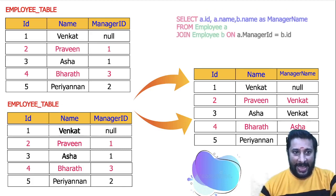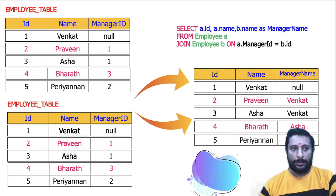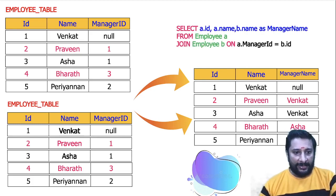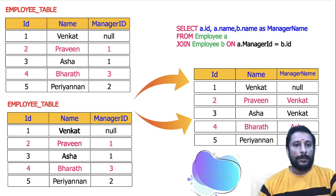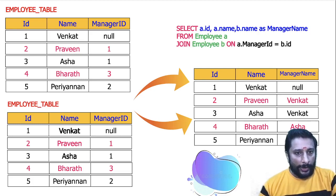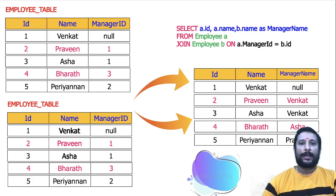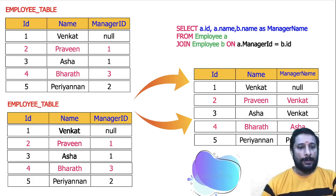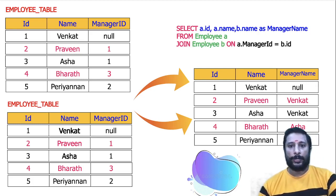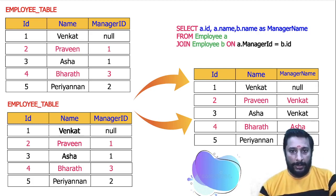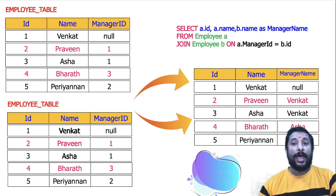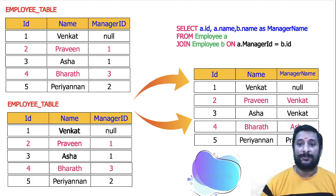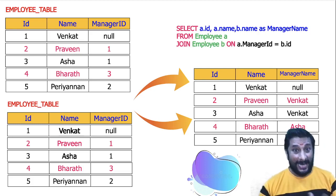I'm going to rewrite the query. Take the ID from table A, take the name from table A itself, take the manager name from table B, then combine them by joining the manager ID with the ID from the other row. So combining this, I get the specific query: employee table A joined with employee table B as a self-join, and I'm able to fetch the desired output. This is how self-join works.